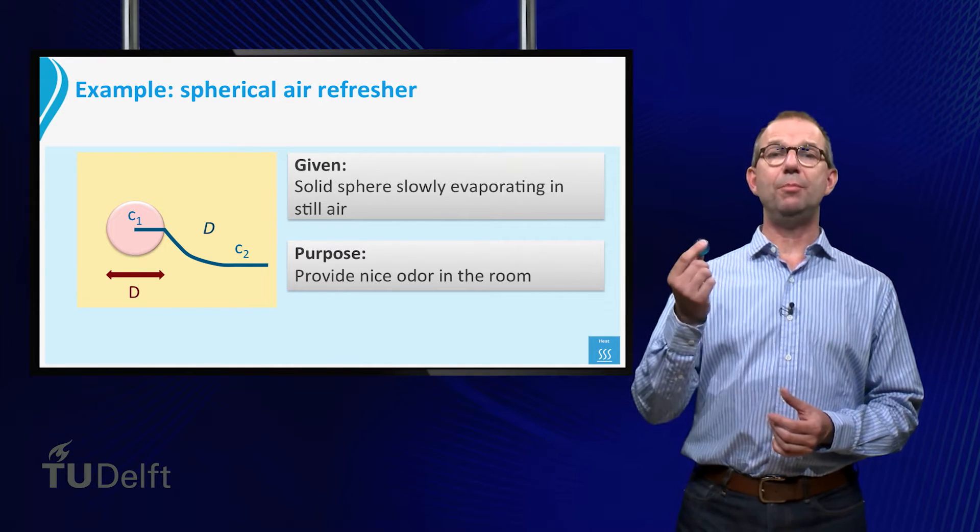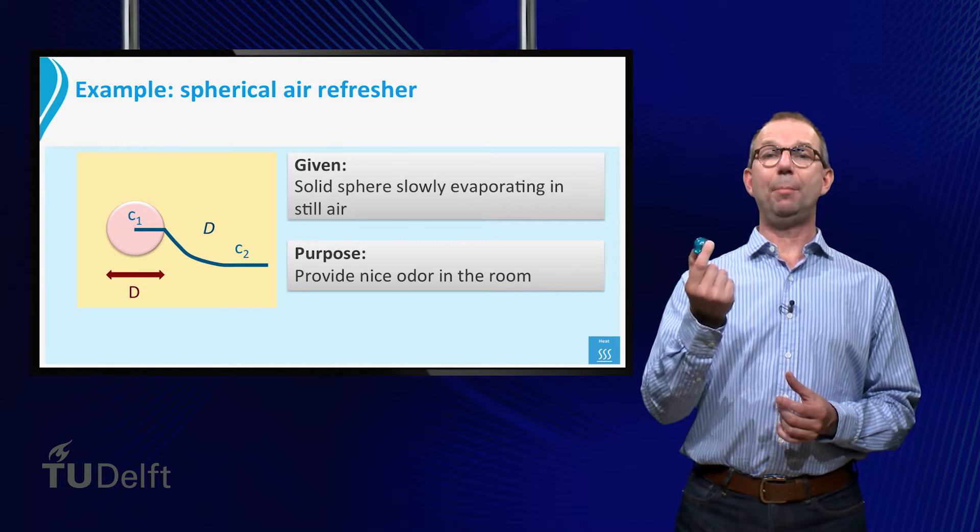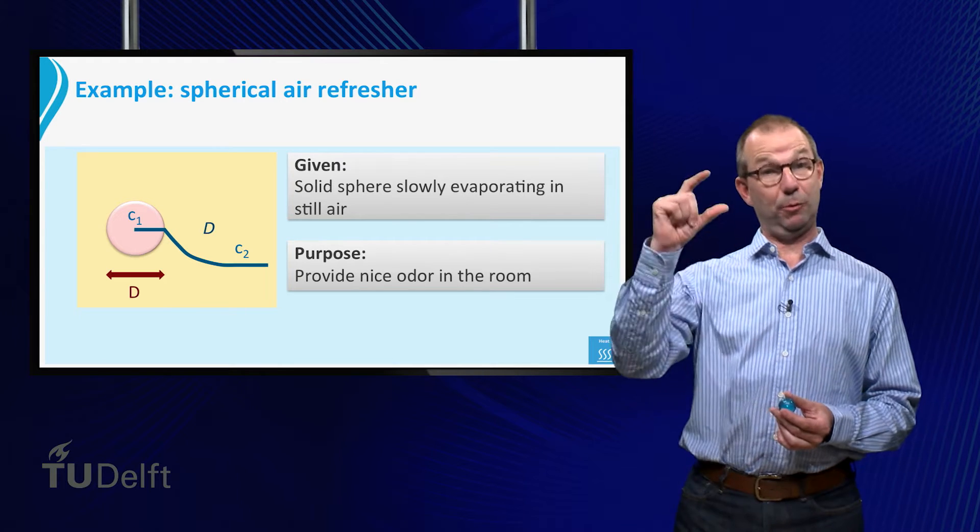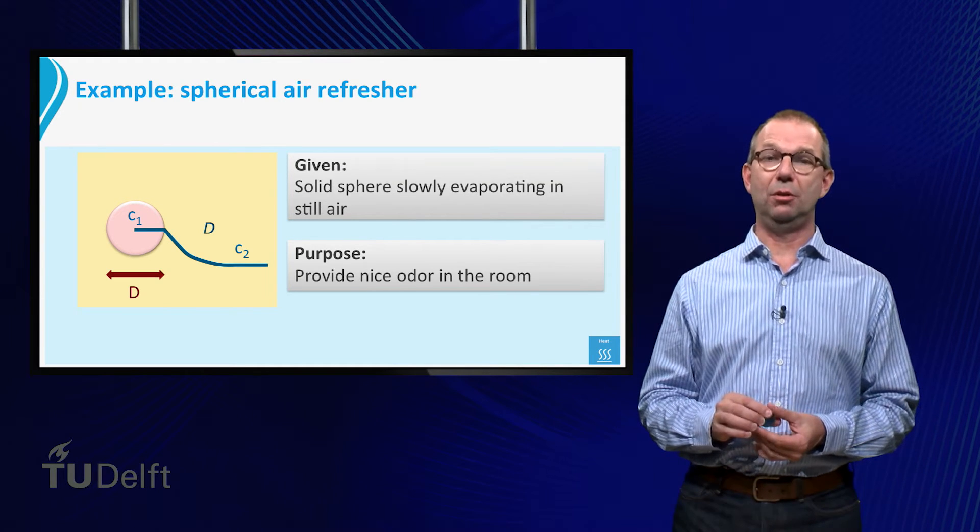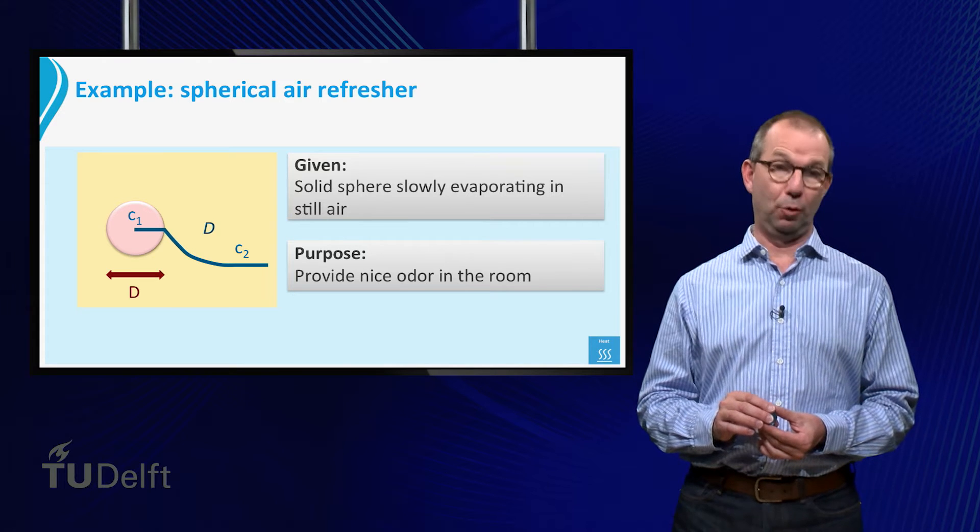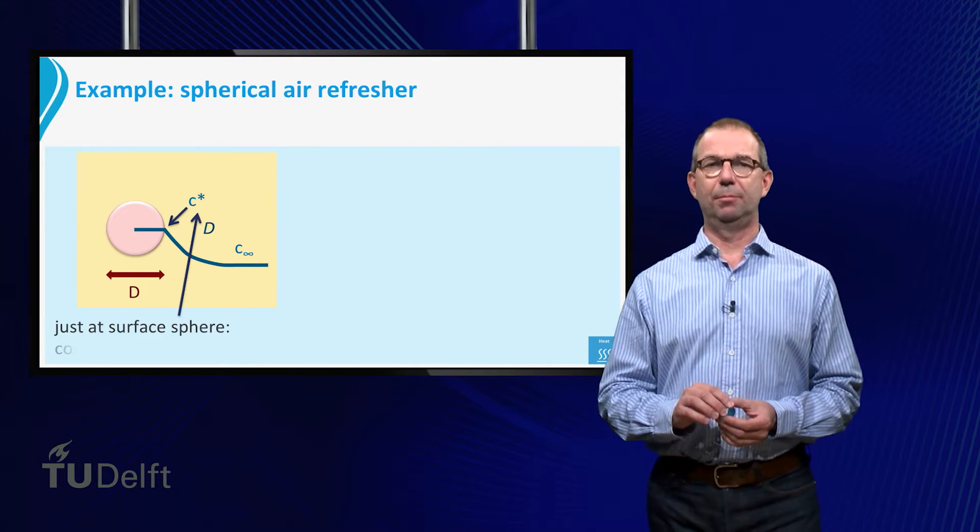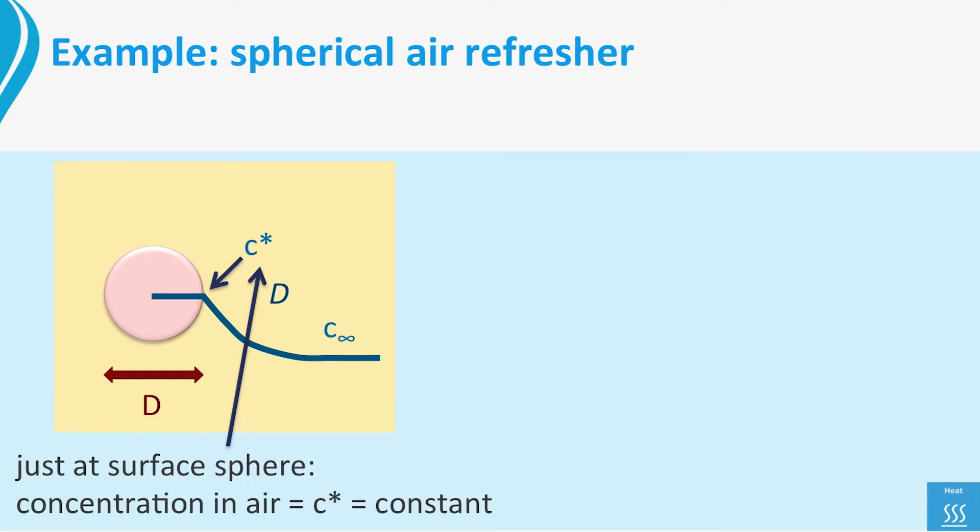Can we describe this evaporation process and what will happen to the sphere? Well the second question is easy. The sphere will shrink and sooner or later we need to put a new one in our bathroom. We need to be a bit more careful here. The concentration of the vapor just outside the sphere is not the same as the density of the sphere. To remind us, we will call this vapor concentration C star and we will denote the density of the sphere later on by rho.